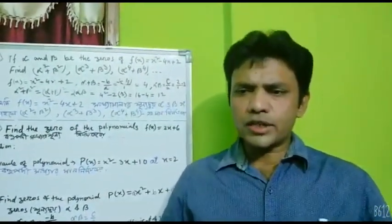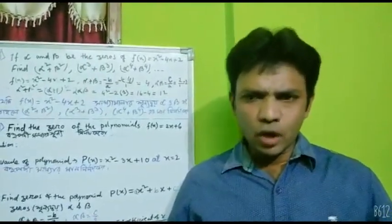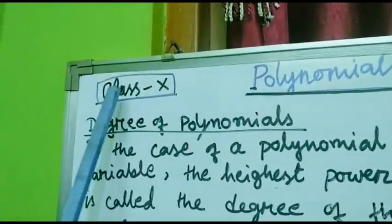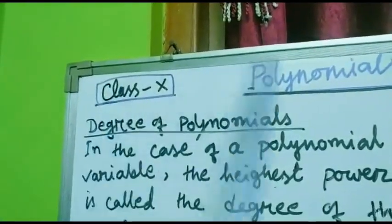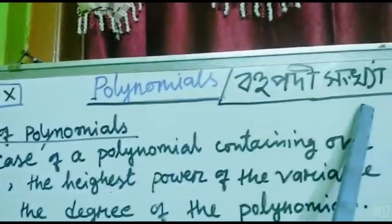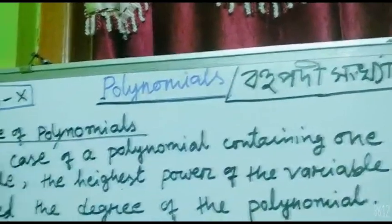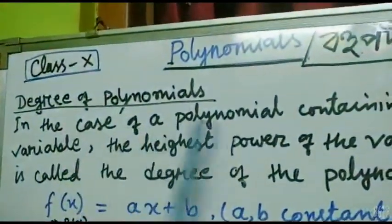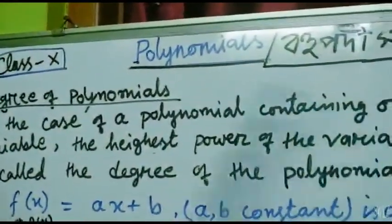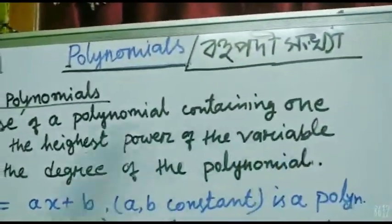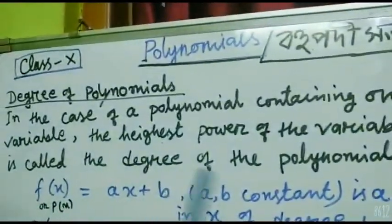Before starting this class or this chapter, we will discuss some basic concepts of polynomial. Look at the book — Class 10, Polynomials (Athwa Bahubadhi Shankha). Degree of polynomials: in the case of a polynomial containing one variable, the highest power of the variable is called the degree of the polynomial.